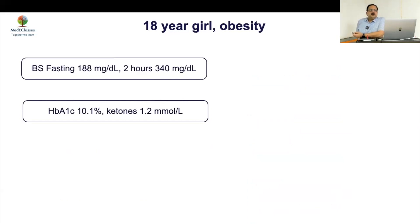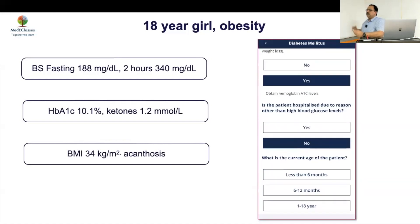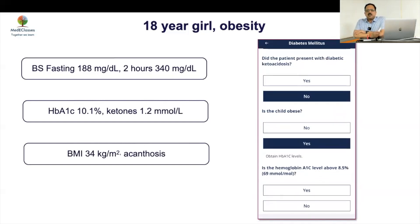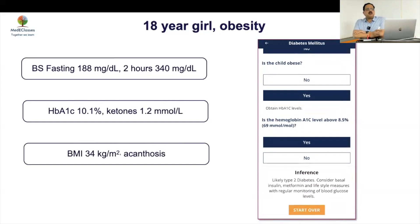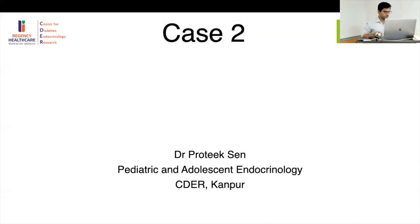Fourth case: an 18-year-old girl with obesity and a similar picture, but HbA1c of 10 with mild ketosis. Because ketones are present, it is better to start basal insulin rather than a full basal-bolus regimen for type 1. The algorithm tells us: age 1–18, no frank DKA but ketosis present, child is obese — basal insulin may be required. So essentially you look at three things: age, DKA yes/no, and obesity yes/no. Then do GAD antibody and genetic study — that's it.